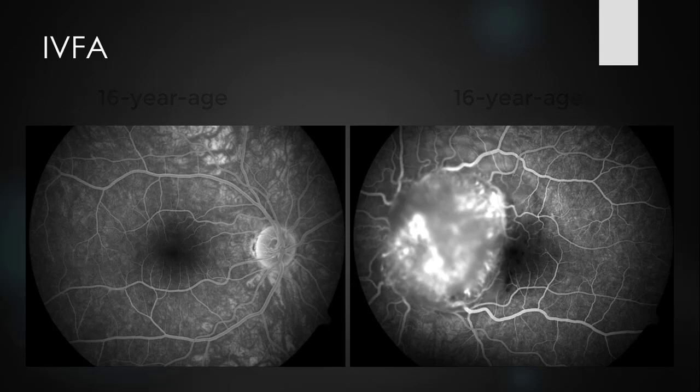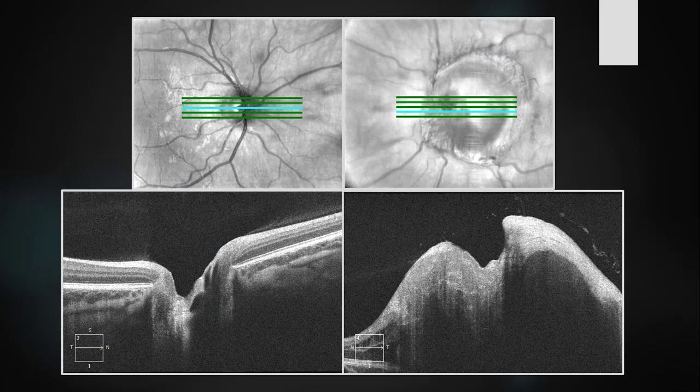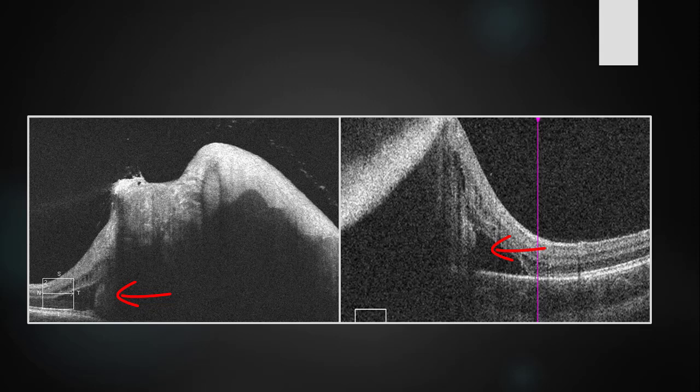On fluorescein angiography, the lesion showed fluorescein staining in the late frames. OCT through the edges of the lesion revealed a subretinal component.